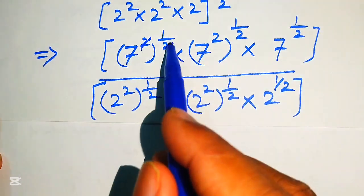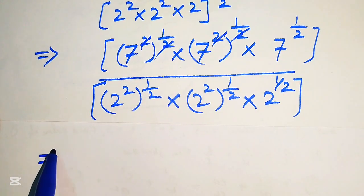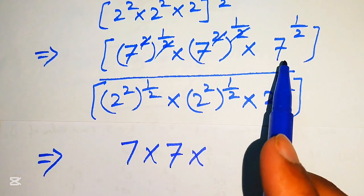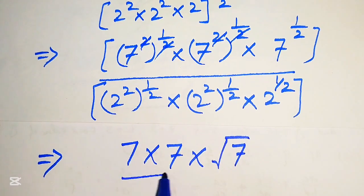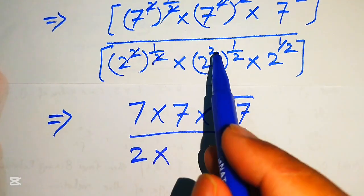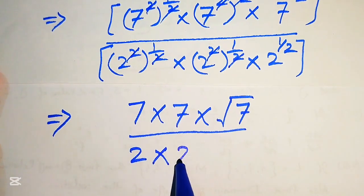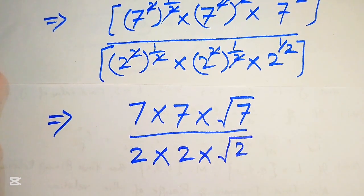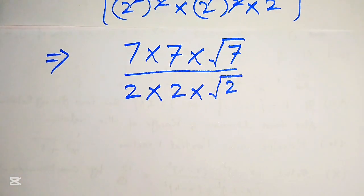Now the powers simplify: (7²)^(1/2) = 7, so we get 7 × 7 × √7 in the numerator. Similarly, (2²)^(1/2) = 2, giving 2 × 2 × 2^(1/2) in the denominator. We write 7^(1/2) in radical form as square root of 7, and 2^(1/2) as square root of 2.